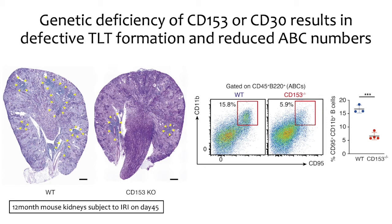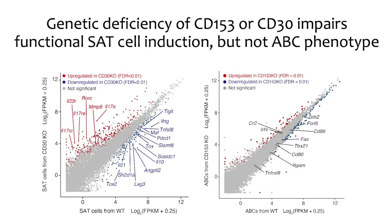Next, we explored the role of the CD153–CD30 signal in TLT formation using CD153 and CD30 knockout mice. As you can see here, genetic deficiency of CD153 results in defective TLT formation and reduced ABC numbers. Similar results were obtained using CD30 knockout mice. We also investigated the gene expression profile of SAT-cells and ABCs in the absence of CD153 and CD30. SAT-cells lost the expression of genes related to B-cell helper function and other SAT-cell-specific genes in the absence of CD153 and CD30. In contrast, the expression levels of ABC identity genes were not changed.